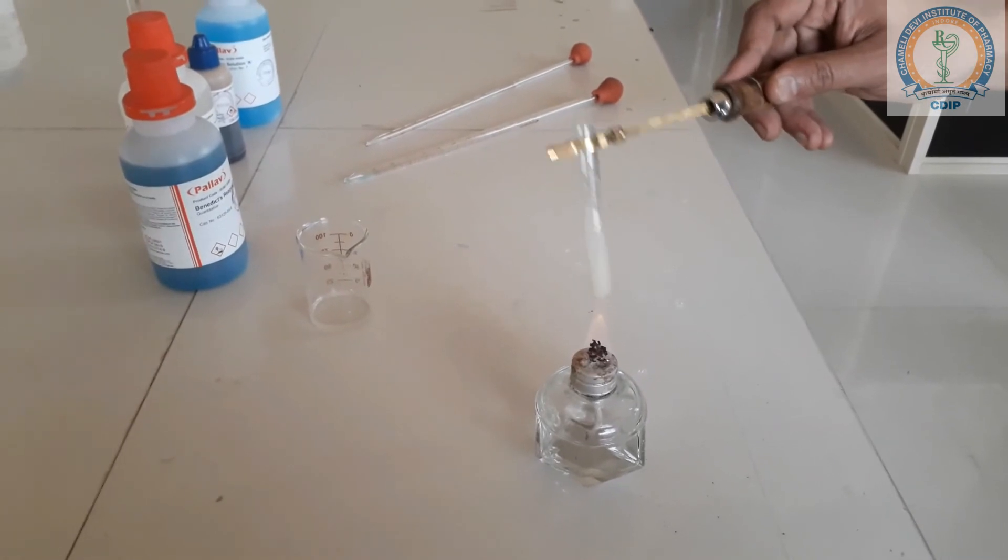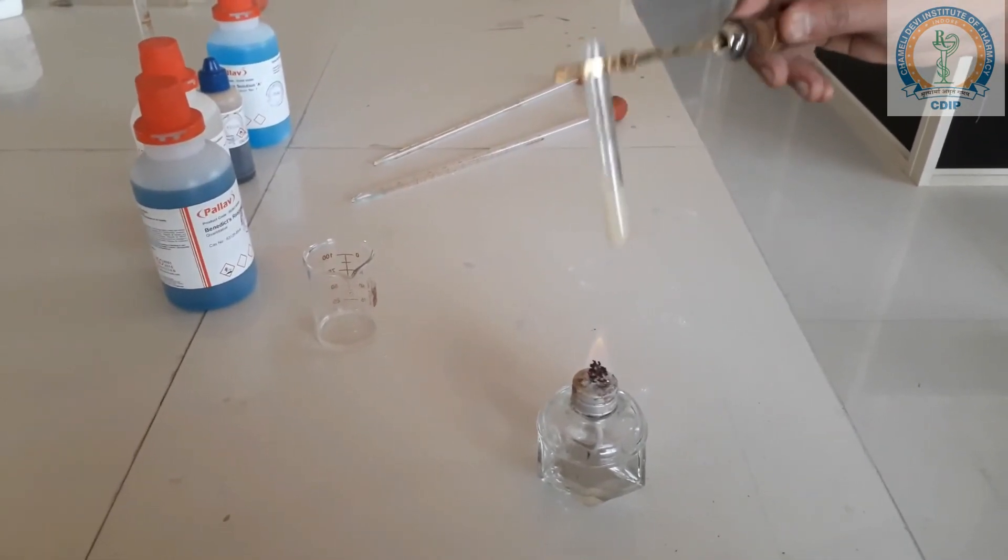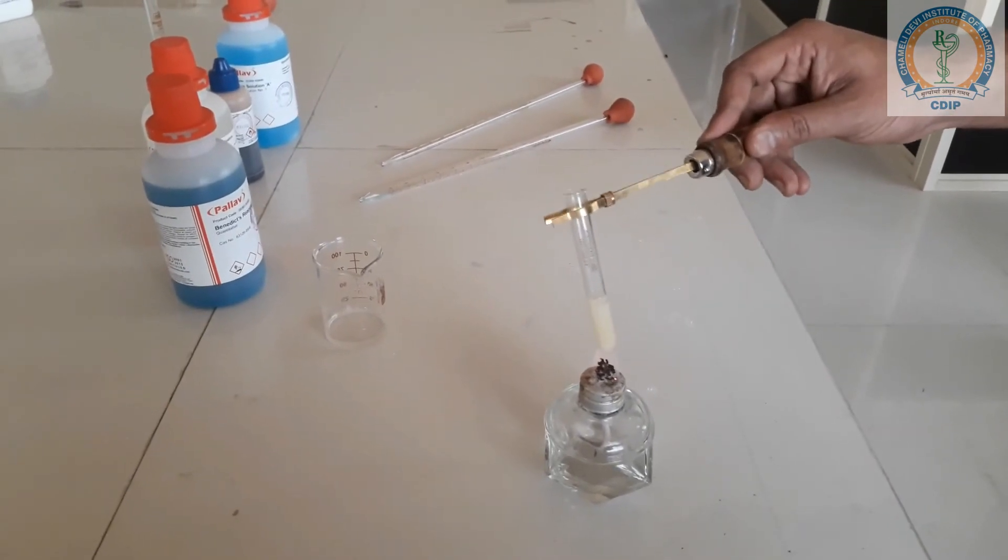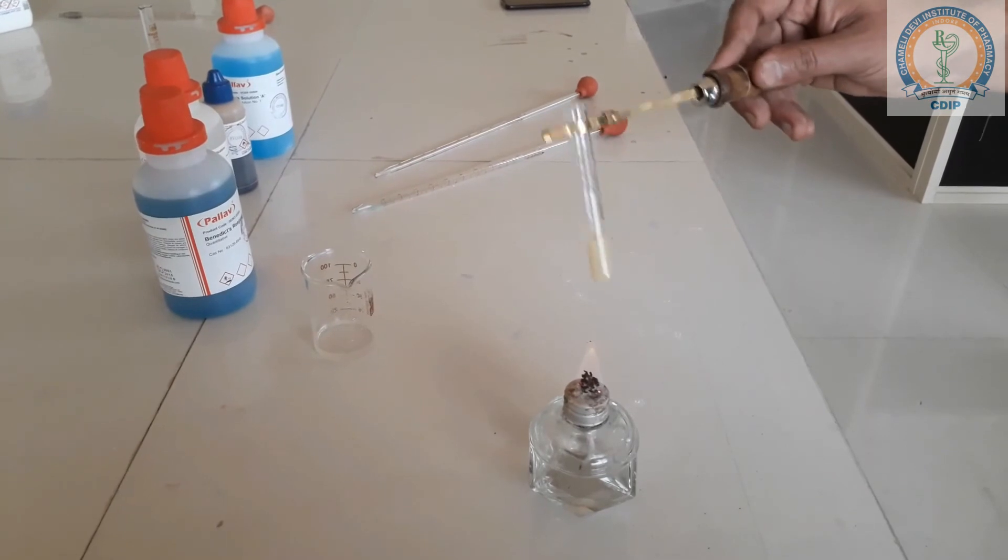On boiling, you can see here the formation of reddish precipitate. It shows the presence of carbohydrate.